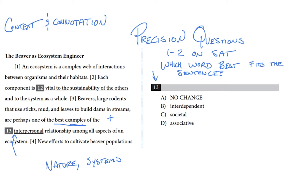So our choices are interpersonal, interdependent, societal, and associative. And all of these words have similar meanings, right? They all mean something approximately like interconnected, but our job here is to sort through that nuance and choose the precise word.